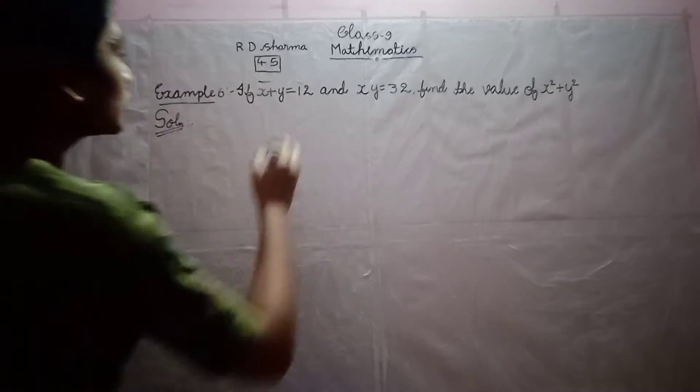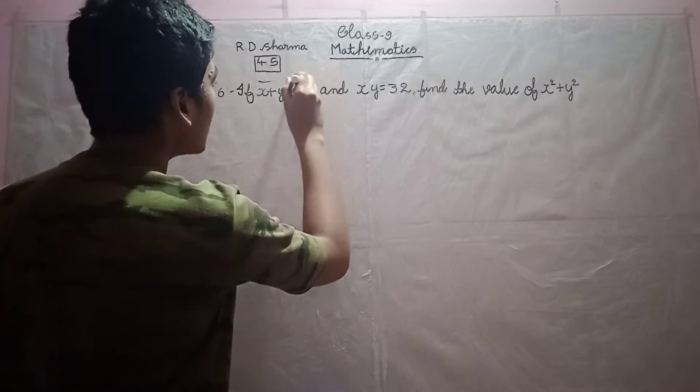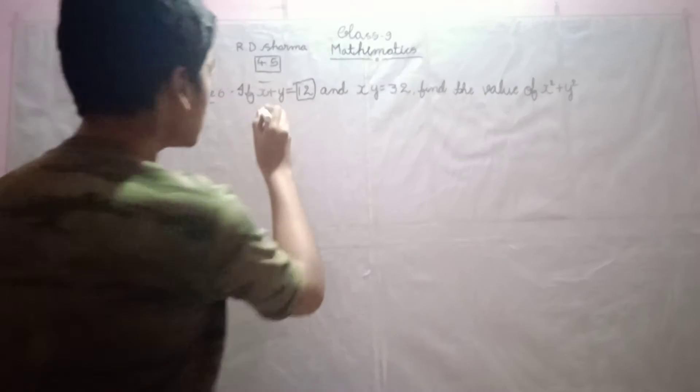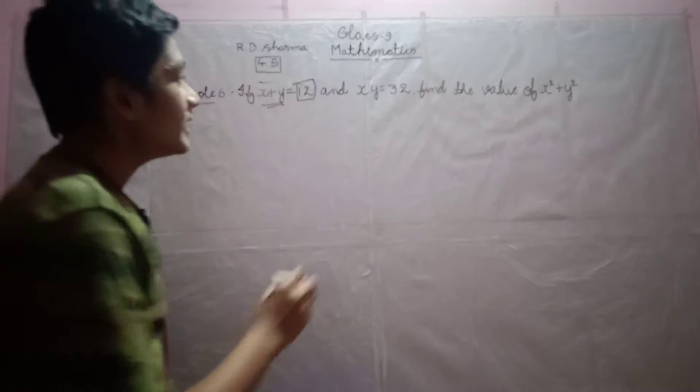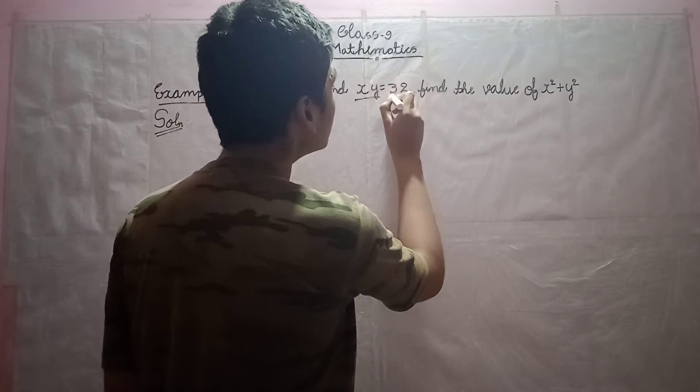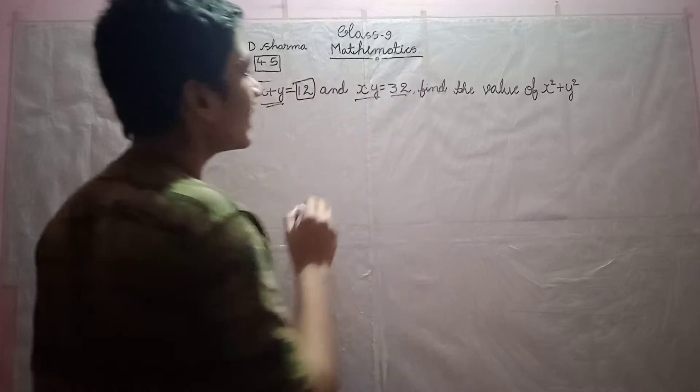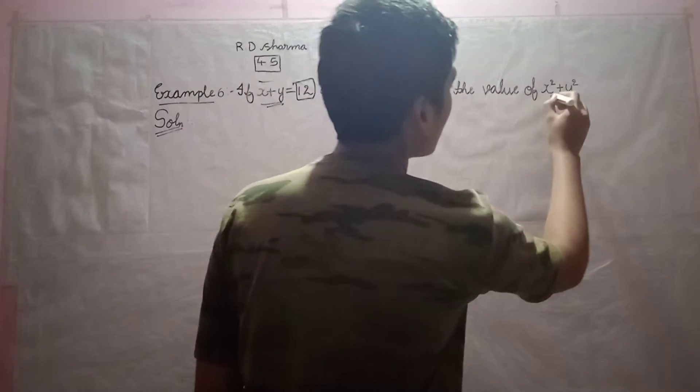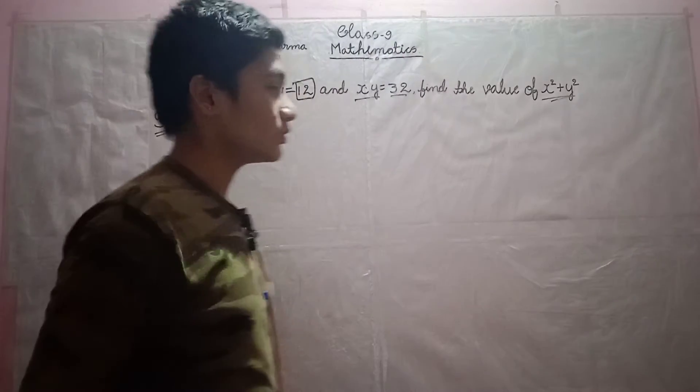The question is given by: if x plus y is equal to 12, carefully observe, they have given the value of x plus y. And xy is equal to 32, the product of x and y, this value is also given. We should find the value of x square plus y square.